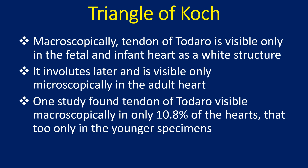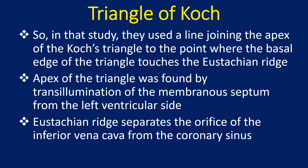The tendon of Todaro involutes later and is visible only microscopically in the adult heart. One study found it visible macroscopically in only 10.8% of hearts, and only in the youngest specimens. In that study, they used a line joining the apex of the Koch triangle to the point where the basal edge of the triangle touches the eustachian ridge.